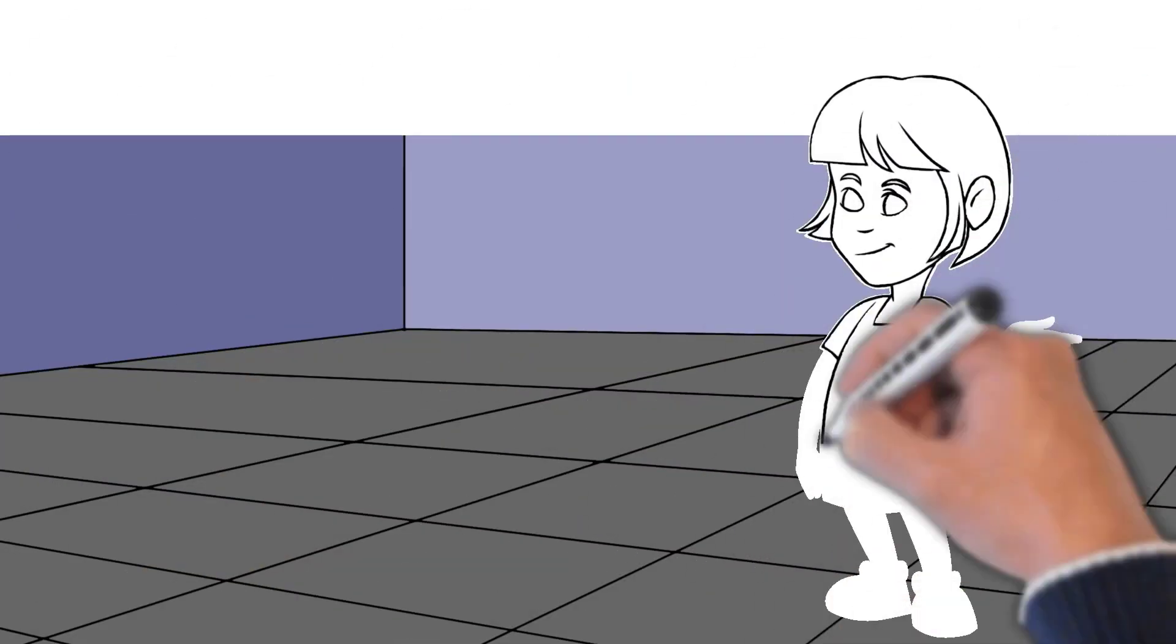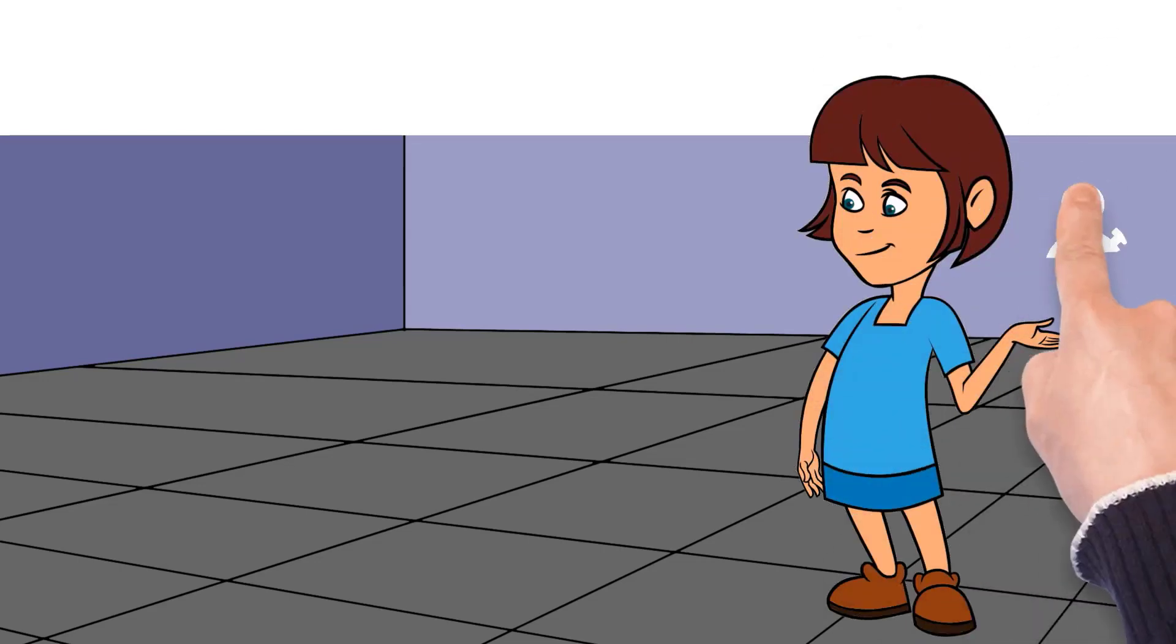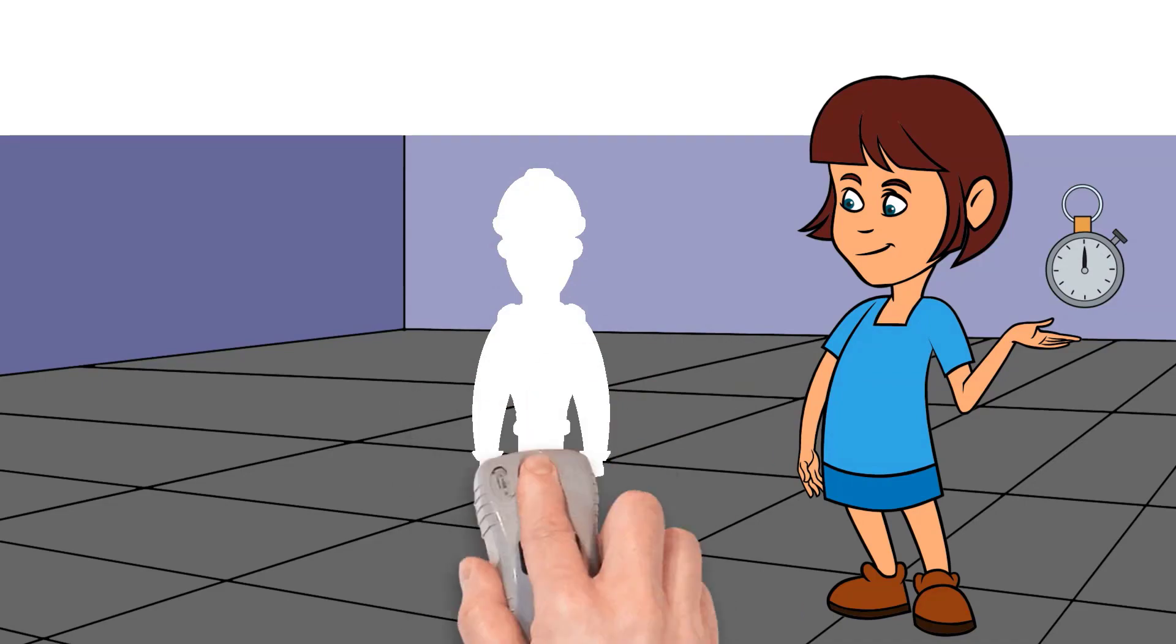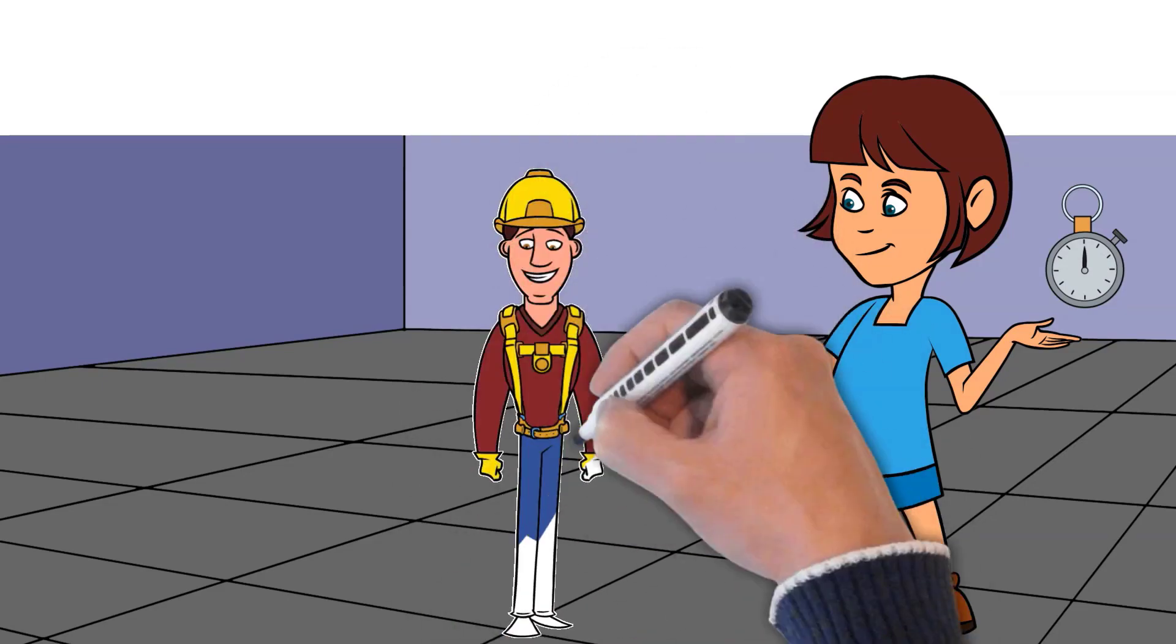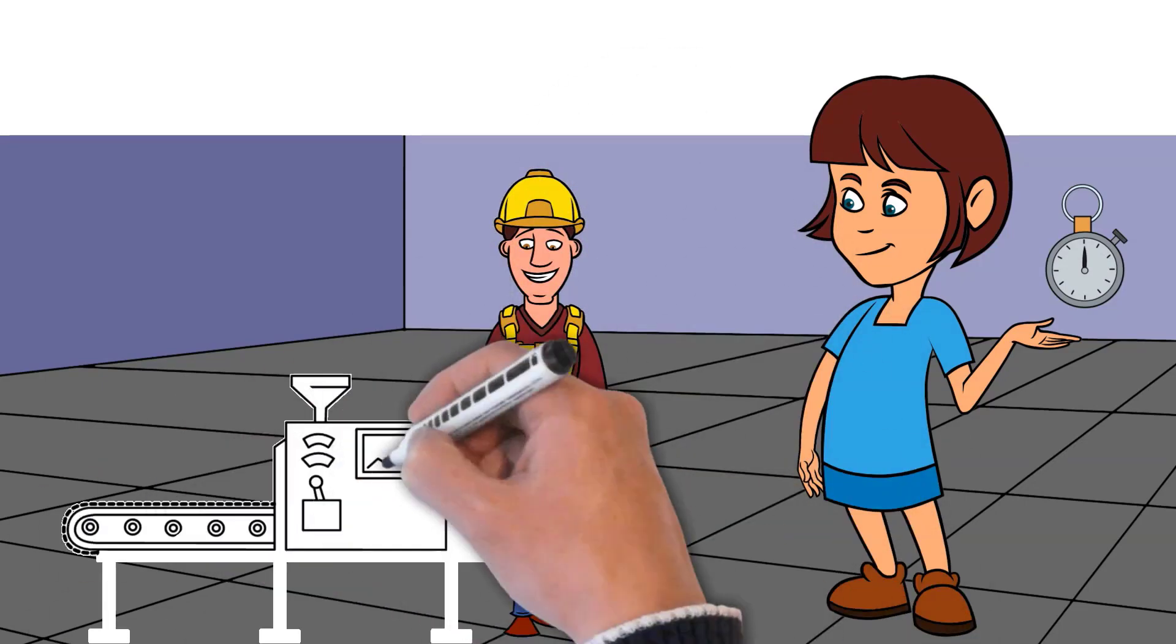Why is this important? Well, knowing your cycle time helps you understand how effectively you're making your product. It's like having a stopwatch for your product processes. The faster and more smoothly you can make a product without compromising quality, the better.